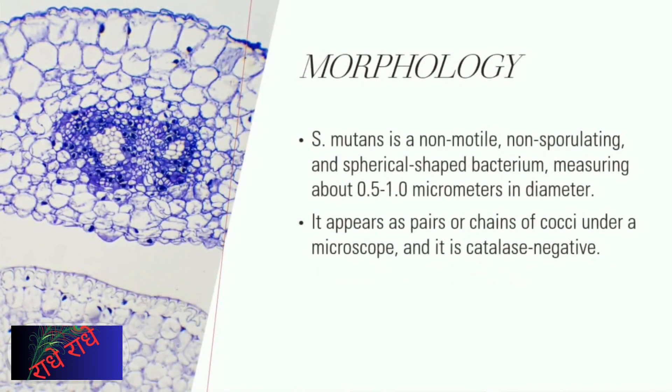Additionally, S. mutans was demonstrated to be a gram-positive organism via gram-staining, with a cuboidal round shape. Microscopically, it was found to be 0.5 to 1.0 micrometers in diameter, and exhibited as pairs or chains of cocci. Additionally, S. mutans was confirmed as a catalase-negative bacterium.